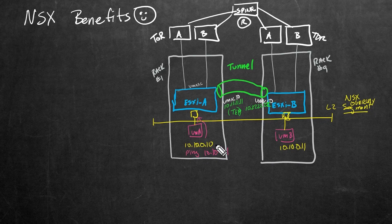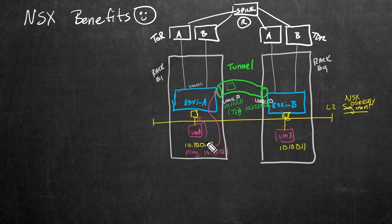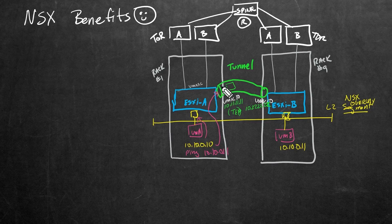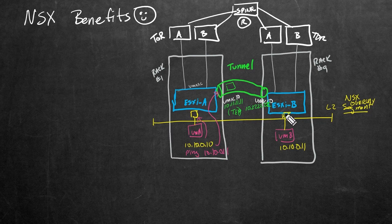The original message gets put into the tunnel and encapsulated. The original content is effectively now the payload, and the tunnel traffic will look like it's coming from 10.11.11.11 being routed to 10.22.22.22. At the other end, it would de-encapsulate it and then forward it down to the intended recipient.